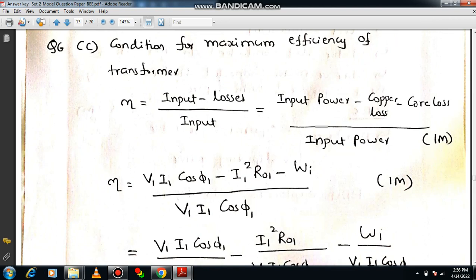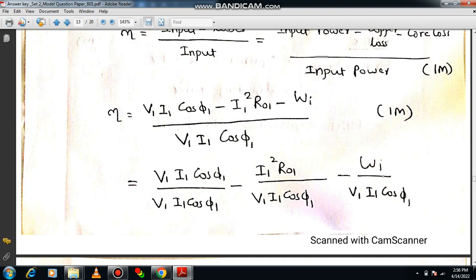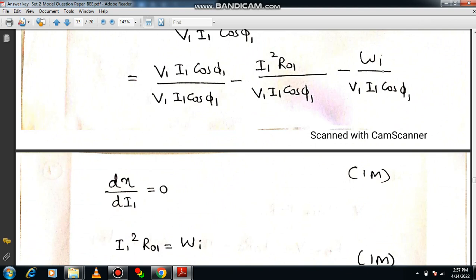Now what is input power? V1 I1 cos phi1. How to calculate copper loss? I1 square R01. R01 is the winding resistance. Then core loss can be written as W subscript I, WI. So there are two type of core loss. No need to mention like hysteresis and eddy current loss. Generally you can maintain it as iron loss or core loss. That is WI divided by V1 I1 cos phi1. Later on you can simplify. So V1 I1 cos phi1 by V1 I1 cos phi1 minus I1 square R01 divided by V1 I1 cos phi1 minus WI divided by V1 I1 cos phi1. So first term will be always one only. The second term I1 will be cancelled at once. The third term as it is.